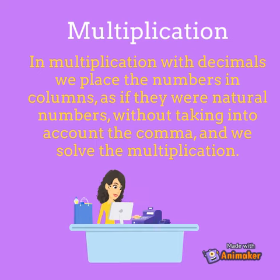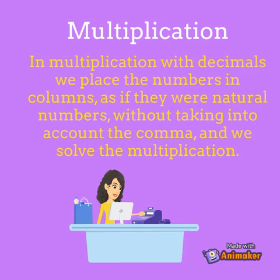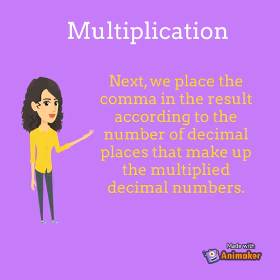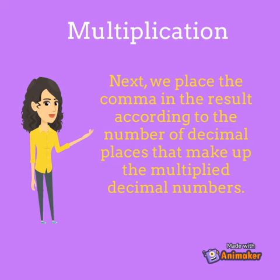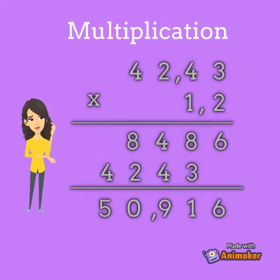Multiplication. In multiplication with decimals we place the numbers in columns, as if they were natural numbers, without taking into account the comma, and we solve the multiplication. Next, we place the comma in the result according to the number of decimal places that make up the multiplied decimal numbers. For example, 42.43 by 1.2 equals 50.916.